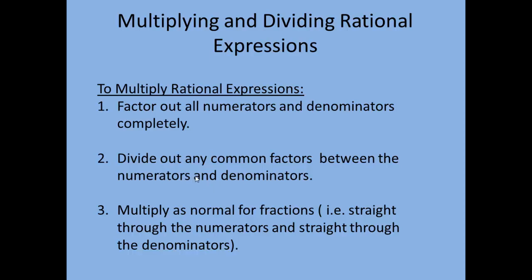Once you've done that, you can divide out any common factors between numerators and denominators. As long as the factor shows up in both a numerator and a denominator, it doesn't matter which fraction it's in — you're allowed to cancel it out. Then in step 3, you want to multiply as normal for fractions, which means multiply straight across through the numerators and straight across through the denominators.